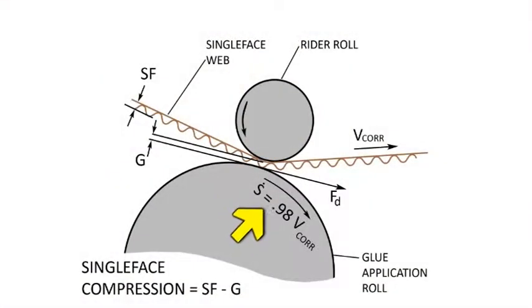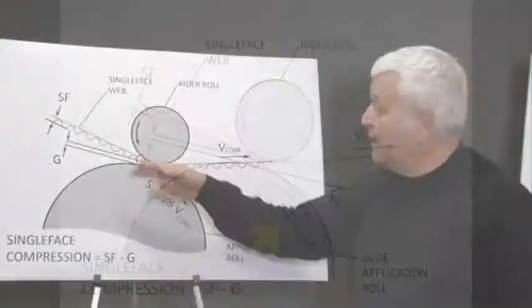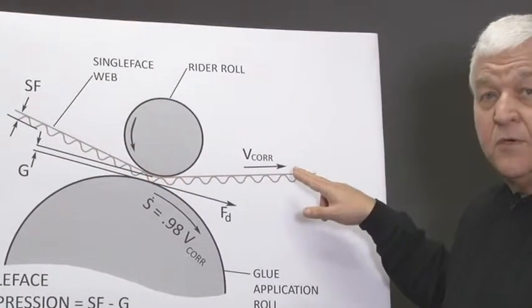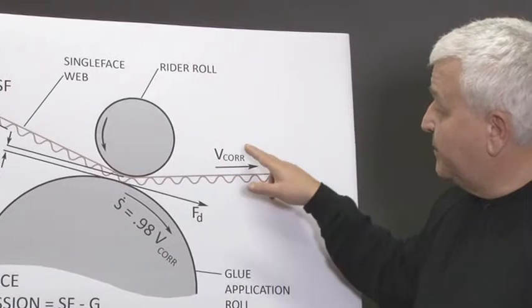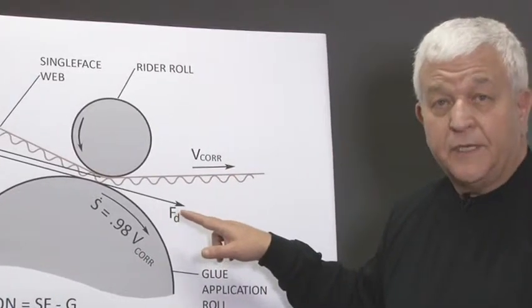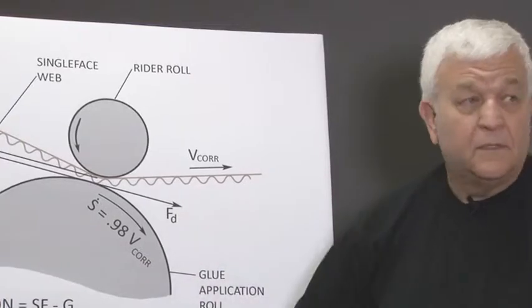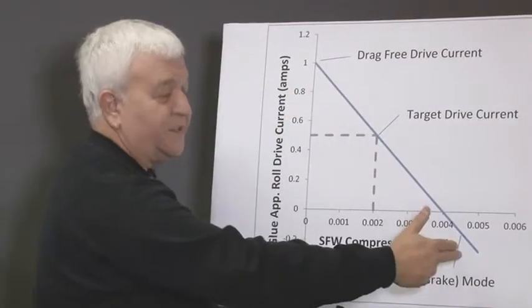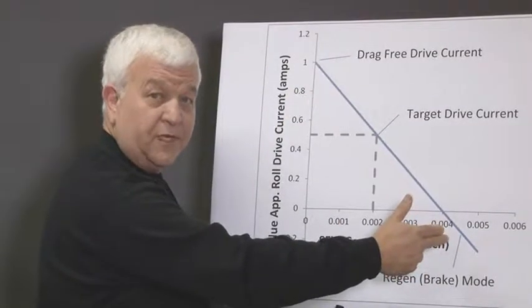The glue roll normally runs under speed to the single face web. As the web passes through the glue roll rata roll nip, the difference in these velocities creates a net force that is detectable in the glue applicator roll drive. This results in a detectable change in the applicator roll drive current.